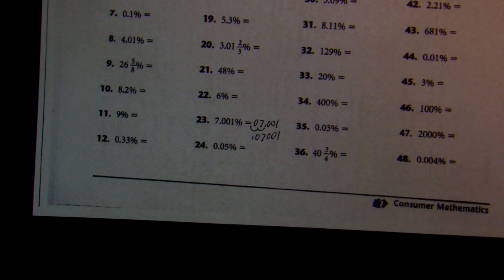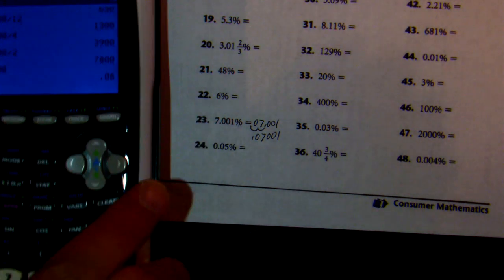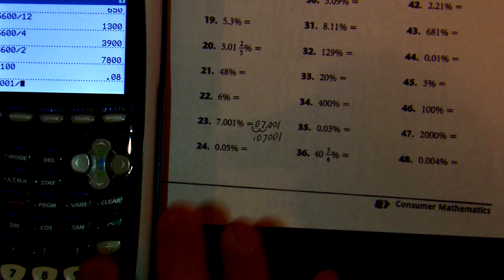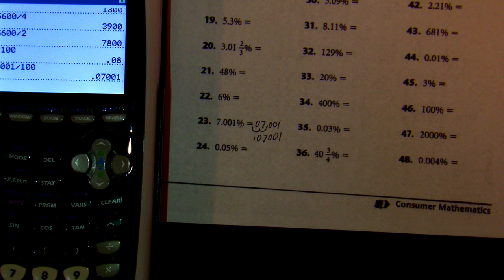So those are some good examples of how these can get tricky. Again, if you don't like the way of changing the percent sign into a decimal point, or if you realize it already has a decimal, you could just take this number and divide it by 100. So 7.001 divided by 100—let's go ahead and do that: 7.001 divided by 100, and you get your answer. So that is renaming percents as decimals.